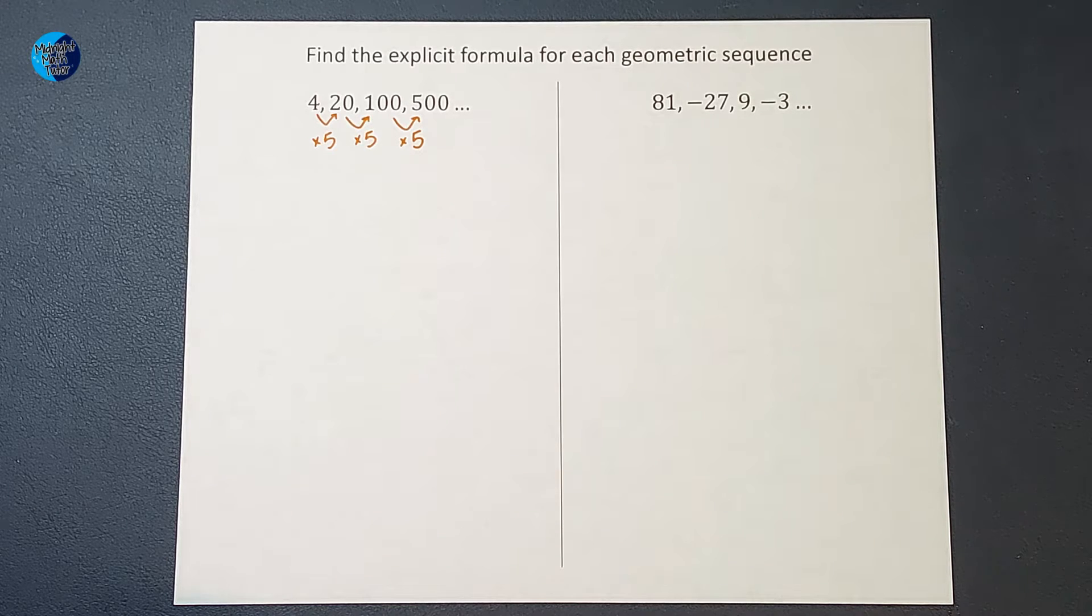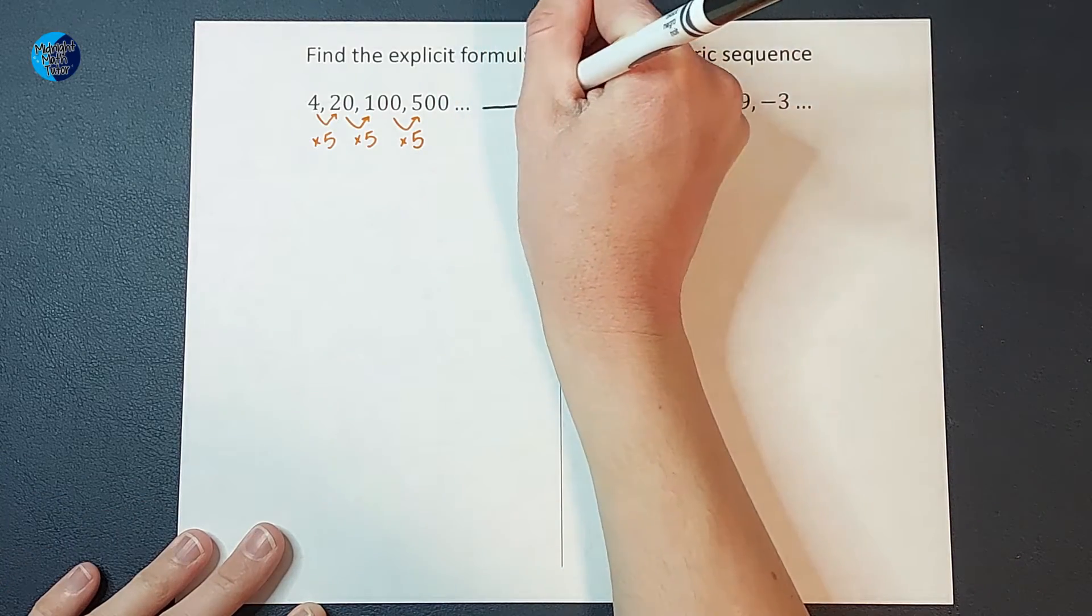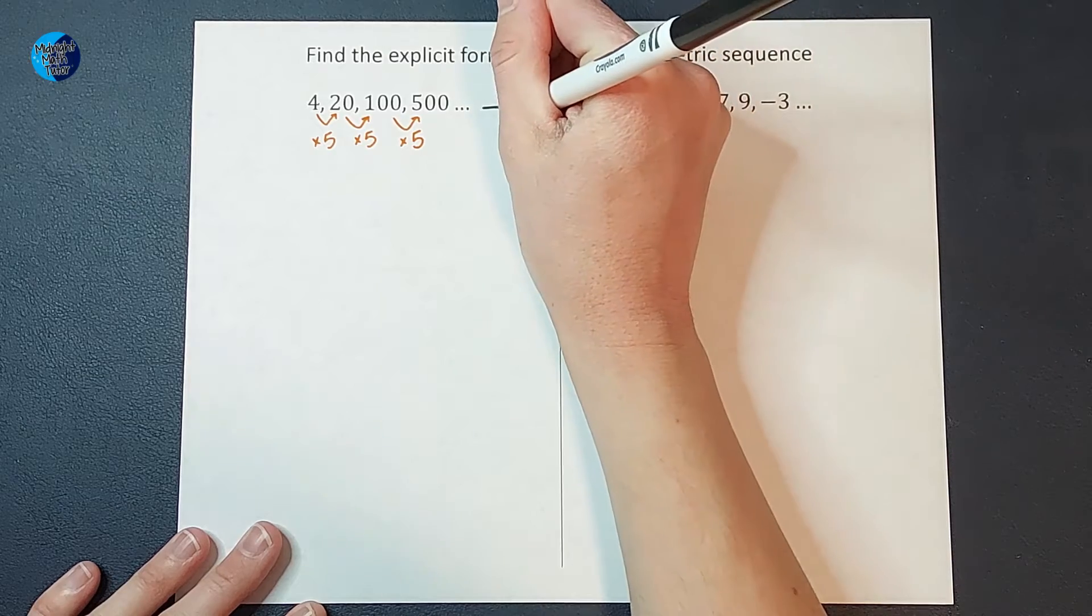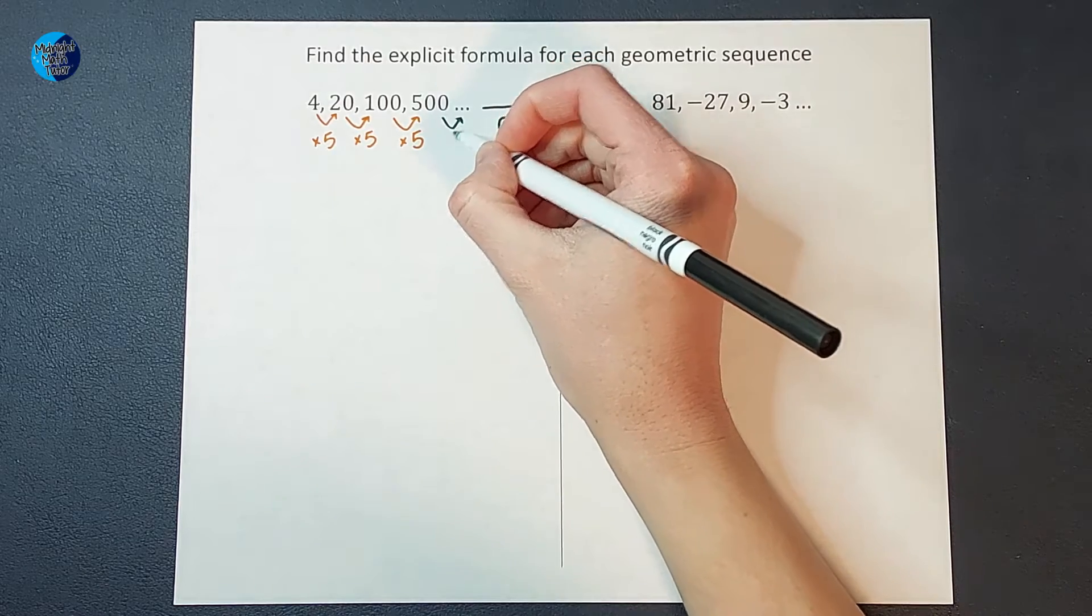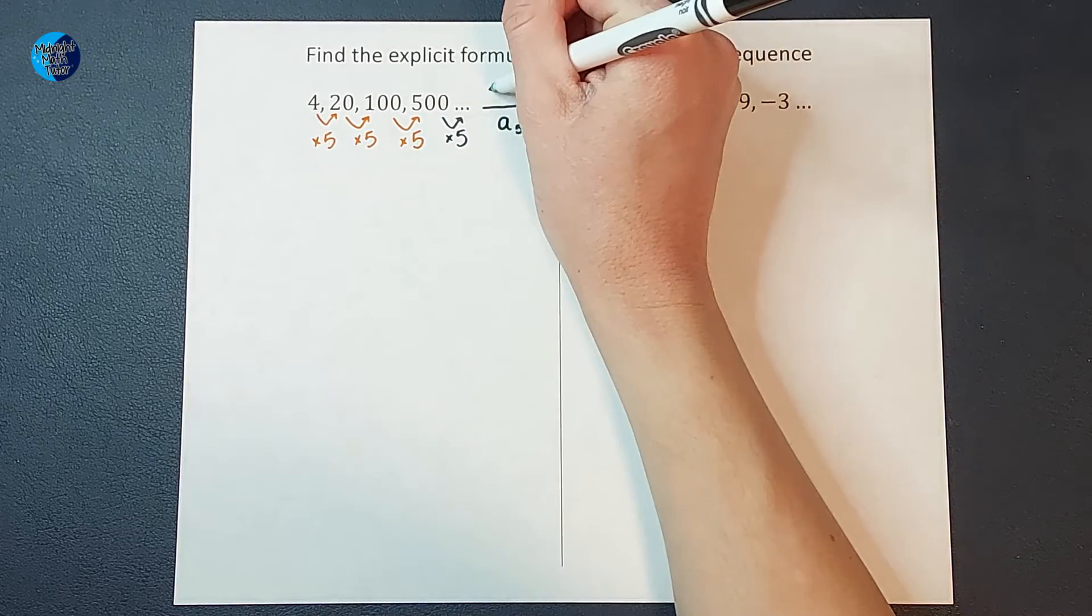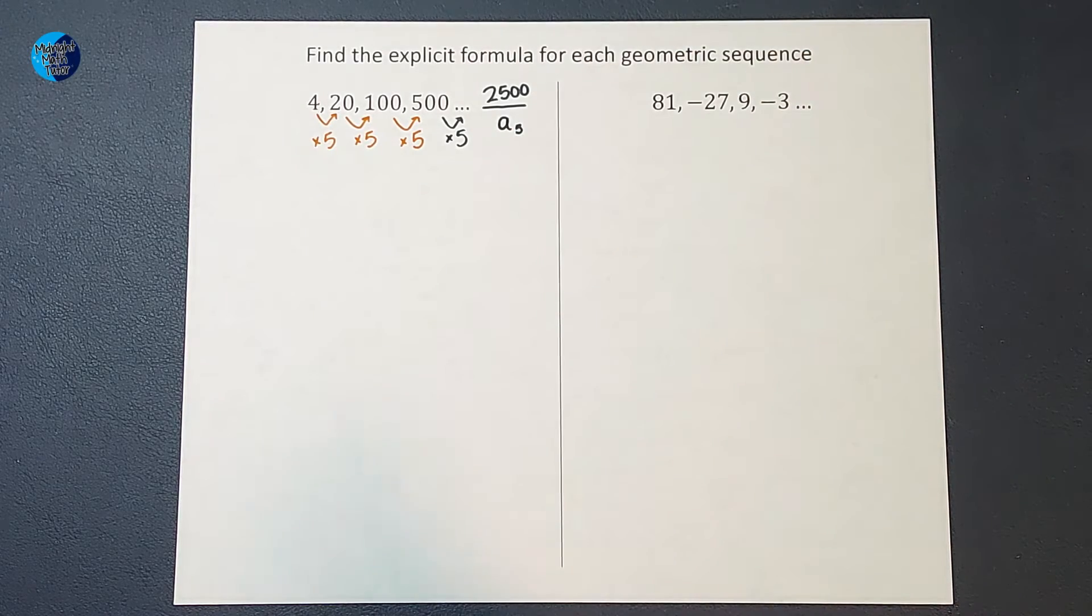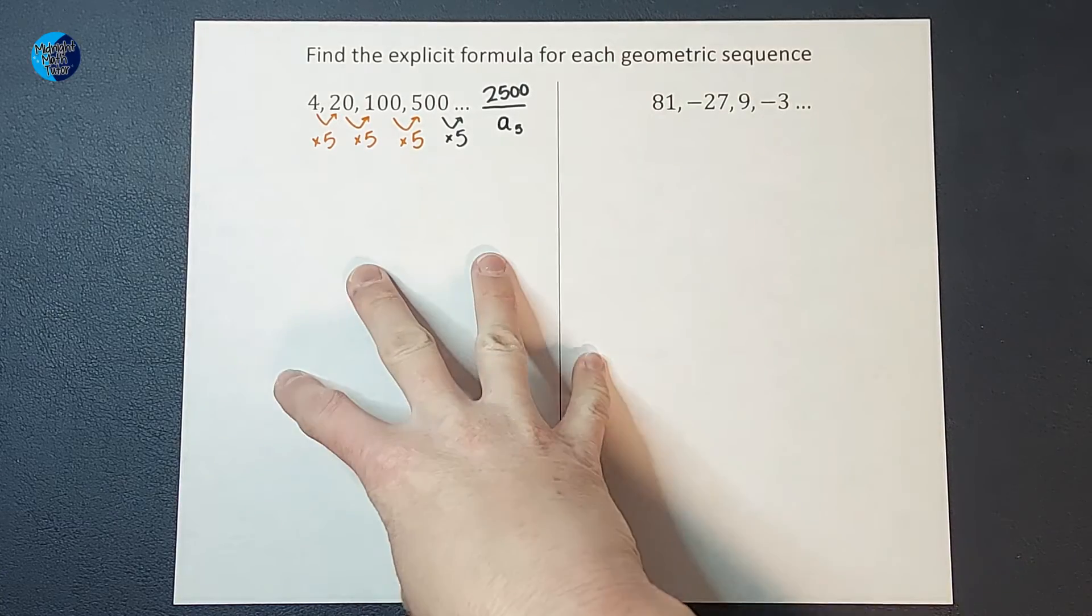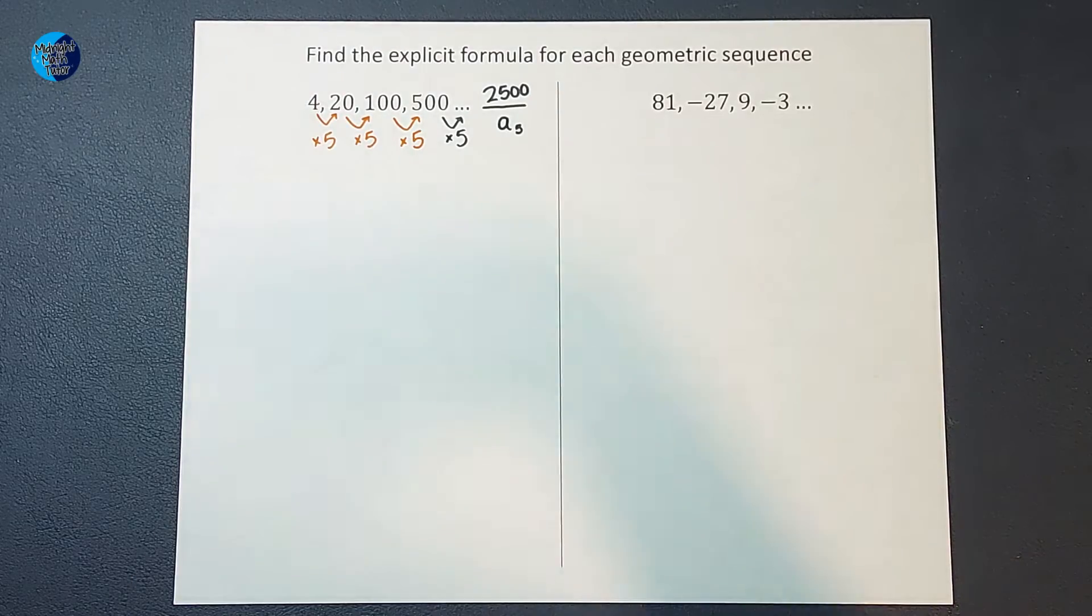Okay, so now that we know that, I want to pretend for a second that we are trying to find the fifth term in this sequence, or we could call it A sub 5. Well, what would I do? I would multiply by 5 again and get 2,500. Which is great. But what if I wanted to find not the fifth term, but I wanted to find the 10th term or the 100th term or the 500th term? Well, the explicit formula is going to allow us to find each of those terms just by plugging in what number we want. Now, if that sounds crazy, guess what? I'm going to show you.